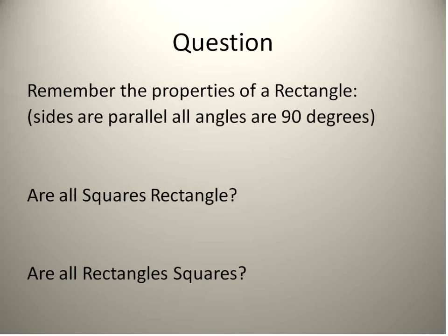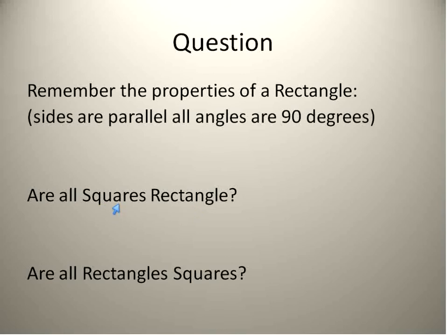Let's look at one more of that type. Remember the properties of a rectangle: two sets of parallel sides and all angles are 90 degrees. Are all squares rectangles? Yes — all squares have parallel sides and 90-degree angles. But are all rectangles squares? No, because some rectangles have different-length sides.